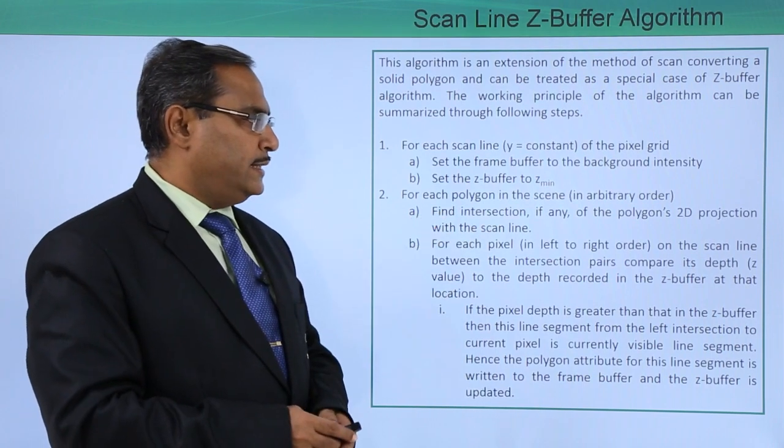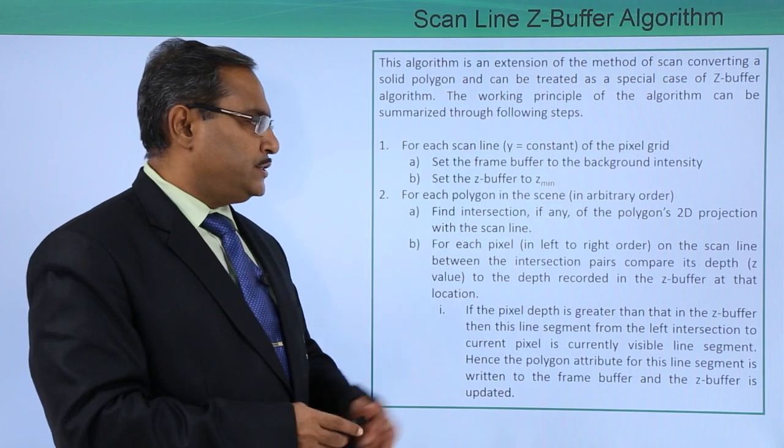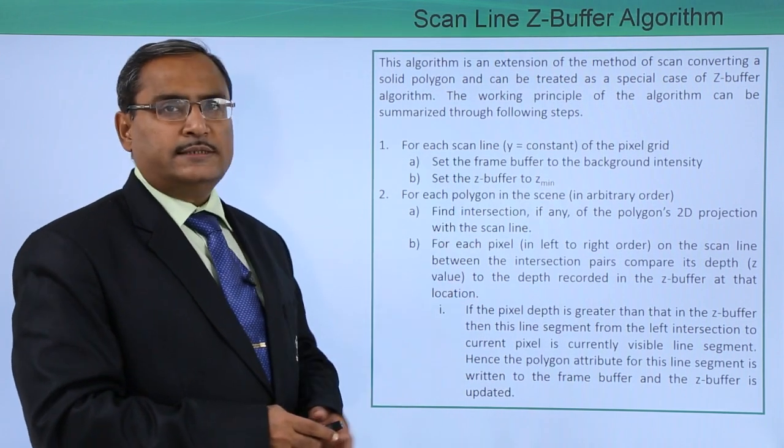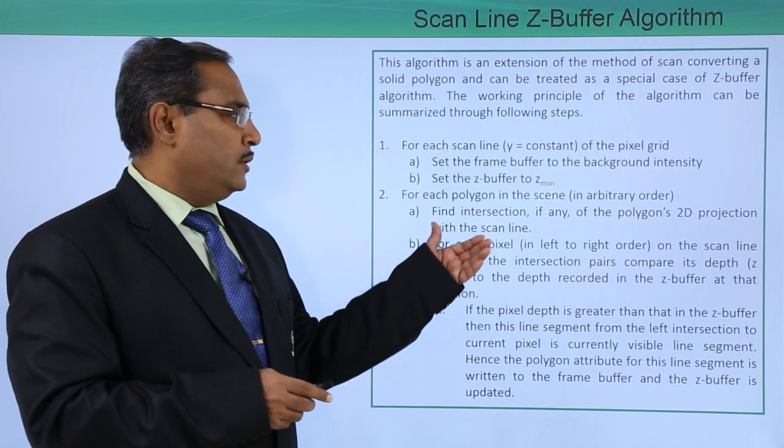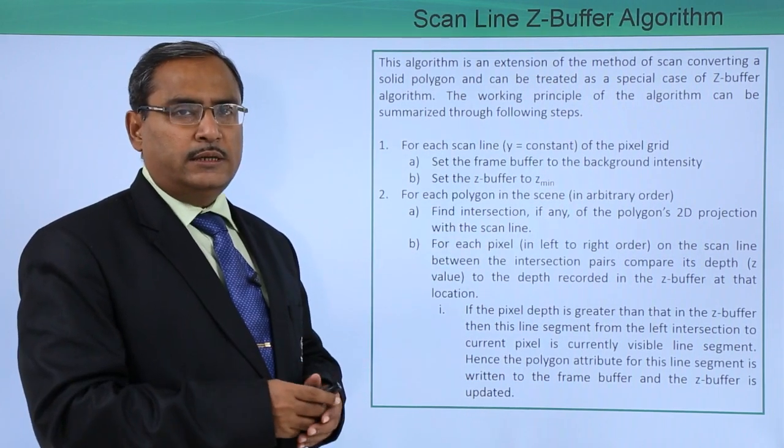For each polygon in the scene in arbitrary order, find the intersection, if any, of the polygon's 2D projection with the scan line. Here we are observing the intersection of the polygons with the scan line.